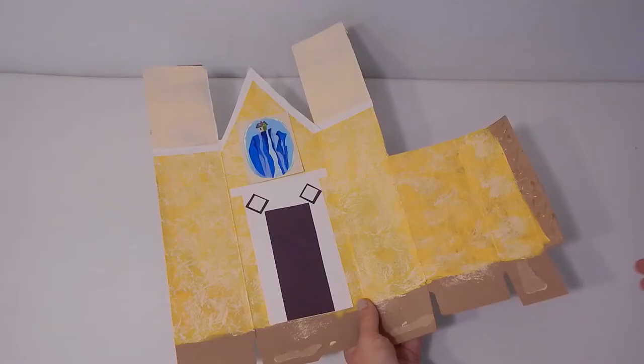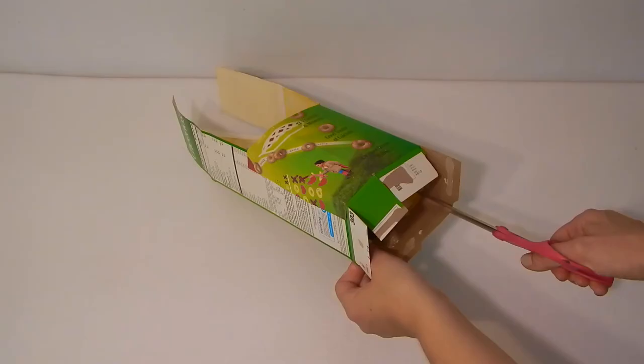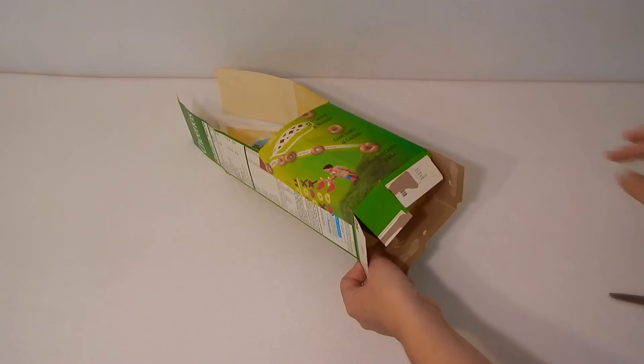Apply hot glue to the tab, fold it over, and attach it to the outside of your first side wall. Snip where necessary and glue your bottom pieces together.